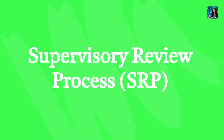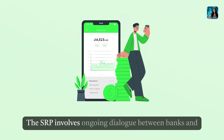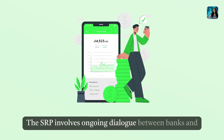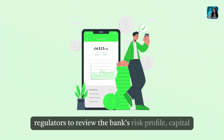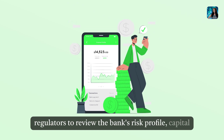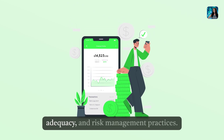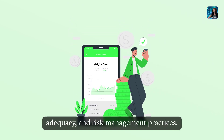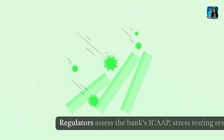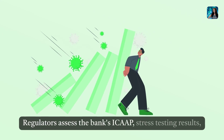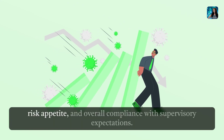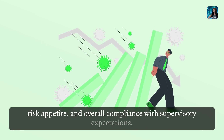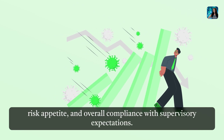Supervisory Review Process (SRP). The SRP involves ongoing dialogue between banks and regulators to review the bank's risk profile, capital adequacy, and risk management practices. Regulators assess the bank's risk profile, stress testing results, risk appetite, and overall compliance with supervisory expectations.